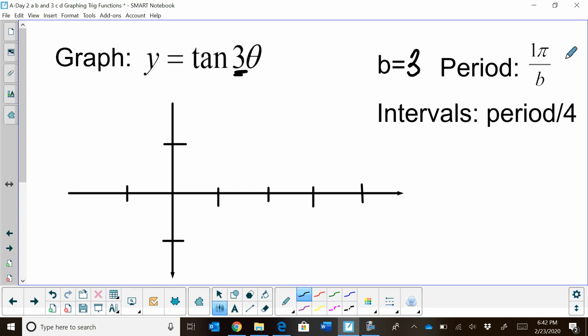So our new period is going to be 1 pi or pi divided by 3. Well, that's just 1 third. That's a very tiny cycle. So that means my full cycle of tangent, which kind of looks like this, will occur in pi thirds. So if I label my axis 0 and I label this pi thirds, that's the beginning and that's the ending of a full cycle.